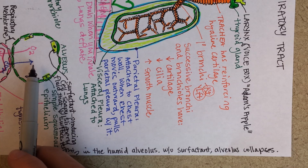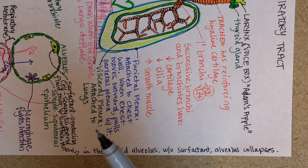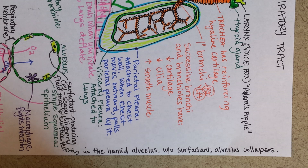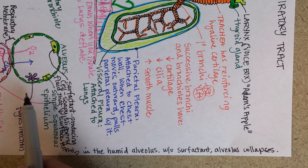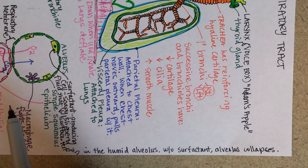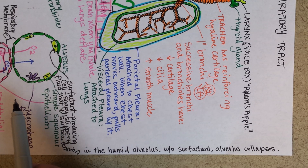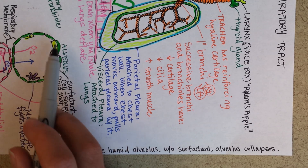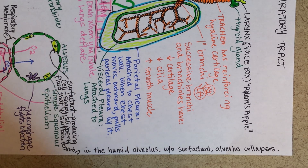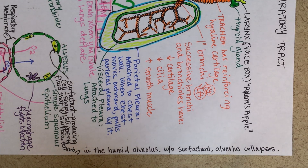Premature babies have to use a lot of muscular strength to inflate their lungs again, and it's sometimes hard to even watch them struggling to breathe. If the doctors know ahead of time that the mother might deliver prematurely, they might give her steroid shots which stimulate these cells to start making surfactant so that the baby is more likely to be ready to be born.